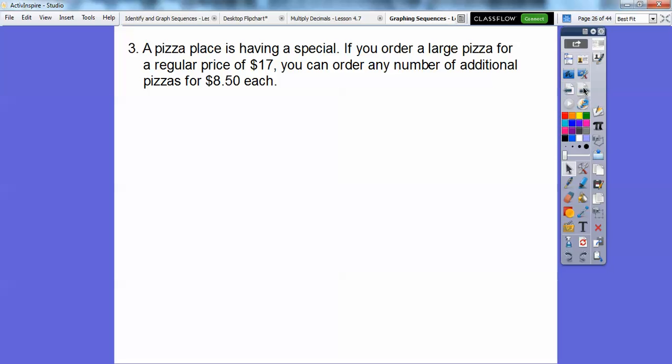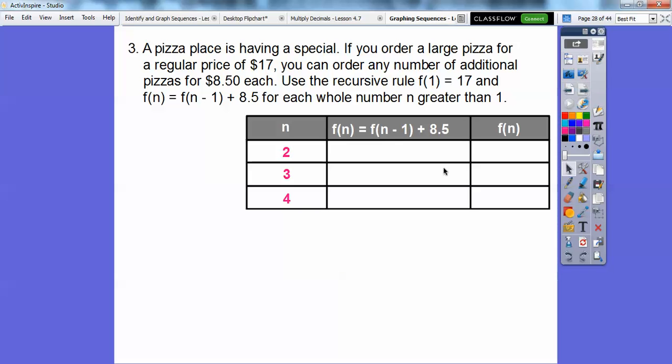Here's another one. A pizza place is having a special. If you order a large pizza for a regular price of $17, you can order any number of additional pizzas for $8.50. So we're going to use the recursive formula rule. Here's the first term, f(1). Remember, this is our first term, equals $17. That's because the first pizza costs $17. And then what we'll do is we'll use the recursive formula of f(n) equals the previous amount plus the $8.50 for each whole number greater than 1.